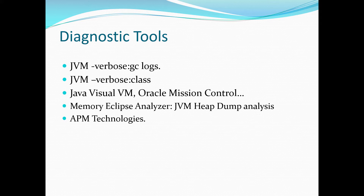For diagnostic tools, you can use VerboseGC logs, which we'll see next in our demo. VerboseClass is very useful because it will keep track of class creation — if you're leaking classes, you can see which types of classes are getting created over time. Java VisualVM and Oracle Mission Control are free out-of-the-box tools typically used for monitoring purposes, allowing you to keep track of the PermGen space over time. For deeper analysis, you can use Memory Analyzer (Eclipse MAT), since even though PermGen is a separate space, you can see class loader and class instances in heap dumps. Typical APM technologies are also useful for monitoring and profiling.